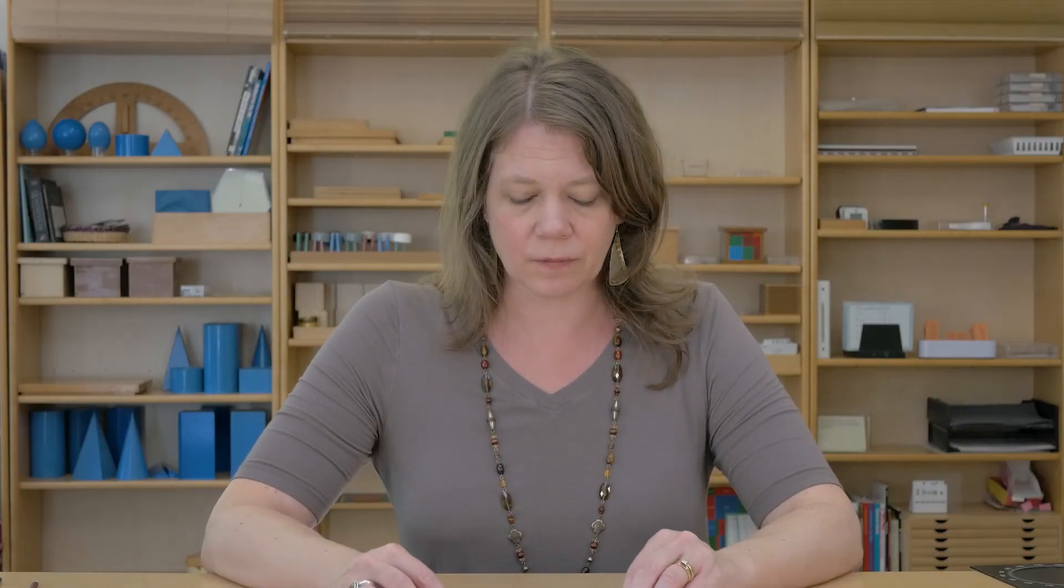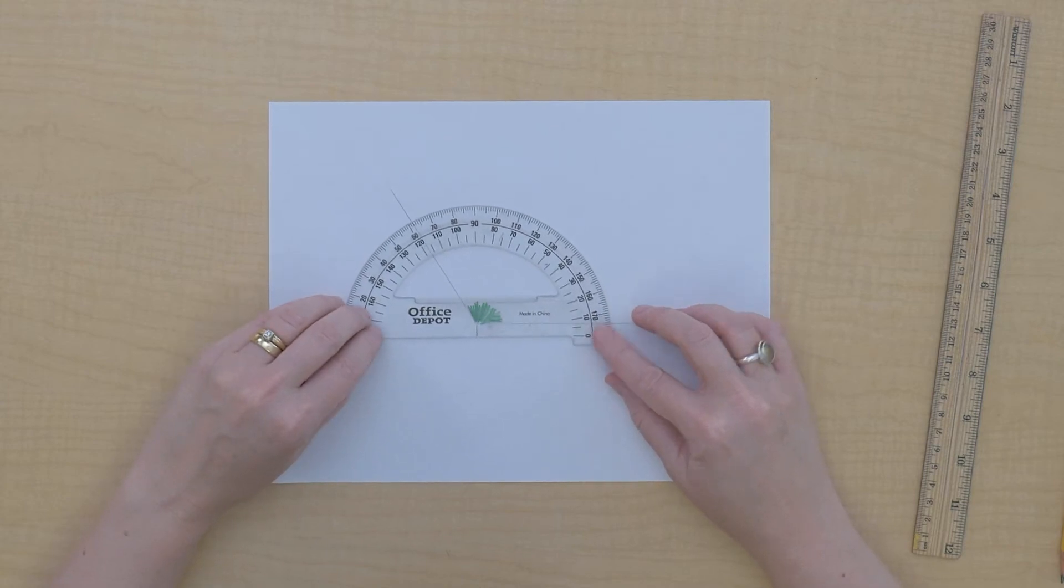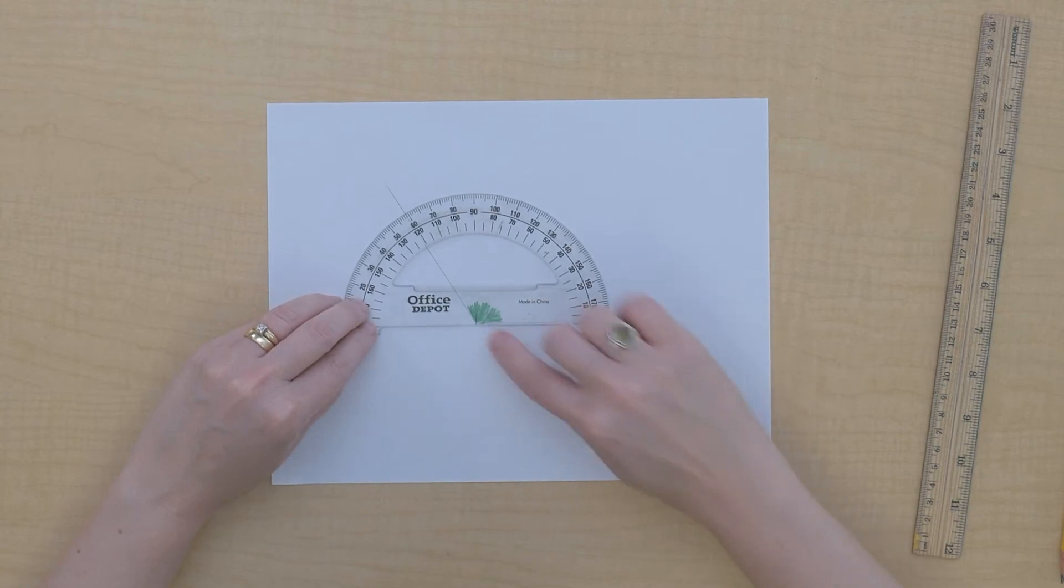I'm going to use this angle measure, this protractor, and it is telling me to line up my vertex right here on this line.